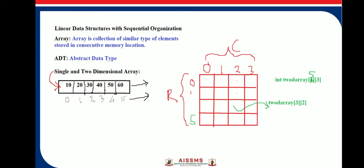An array can be used as an abstract data type, where the abstract data type is written with the help of instances and operations. We make use of the reserved word 'abstract data type' while writing this ADT.